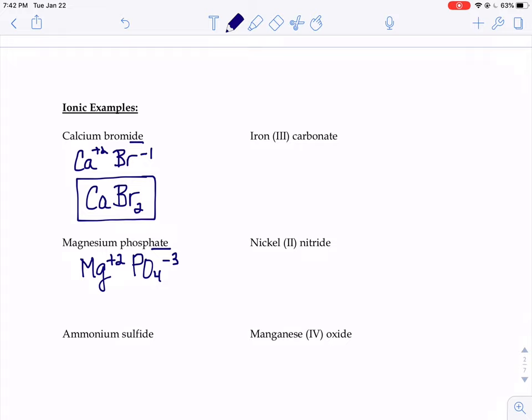Now we have to make our charges balance positive two and negative three. We have to think of the first number that we could get both of those guys into evenly, six. So we basically have to turn magnesium into positive six and phosphate into negative six. To make that happen, we would need three magnesiums, three positive twos, and we would need two phosphates, two negative threes.